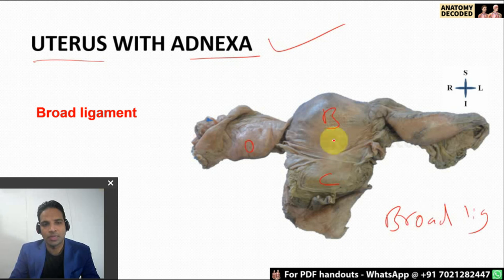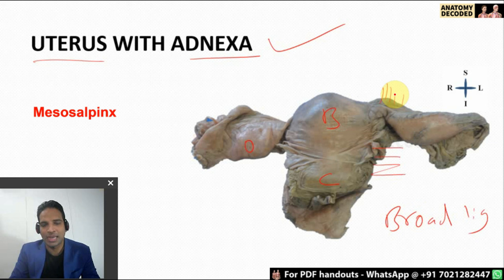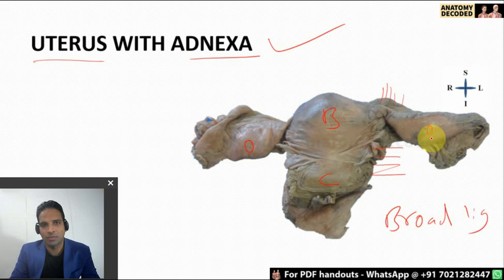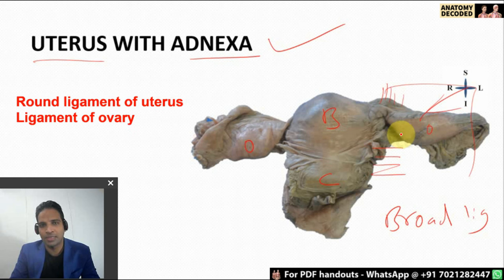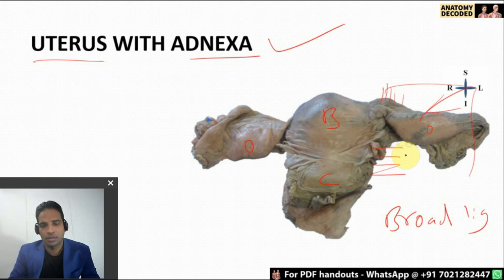The fold of peritoneum here is referred to as the broad ligament. The various parts are important: the part in relation with the uterus is the mesometrium, the part in relation with the fallopian tube is the mesosalpinx, and the part in relation with the ovary is the meso-ovarium. The contents of the broad ligament include the uterine tube, two vessels — the uterine artery and ovarian artery — and two ligaments: the round ligament of the uterus and the ligament of the ovary, as well as remnants of the mesonephric duct: the epoöphoron and paroöphoron.